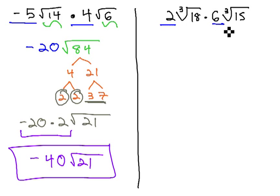Again, we will multiply the parts outside the radical, the coefficients. 2 times 6 is 12. And then inside the cube root, we will multiply the 18 times 15. When we do 18 times 15, we get 270.